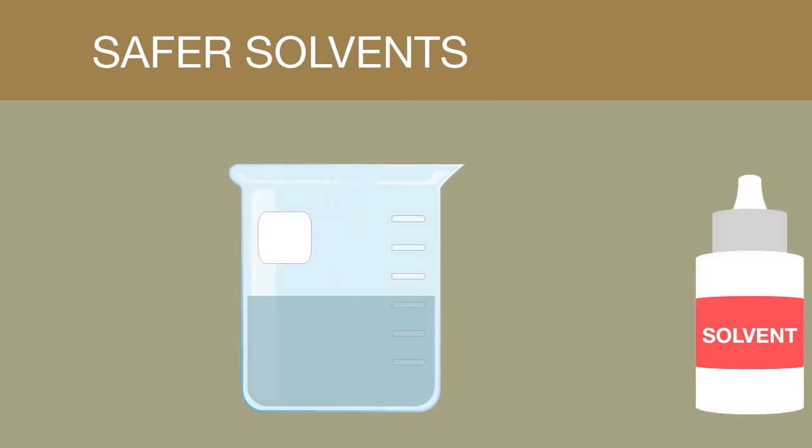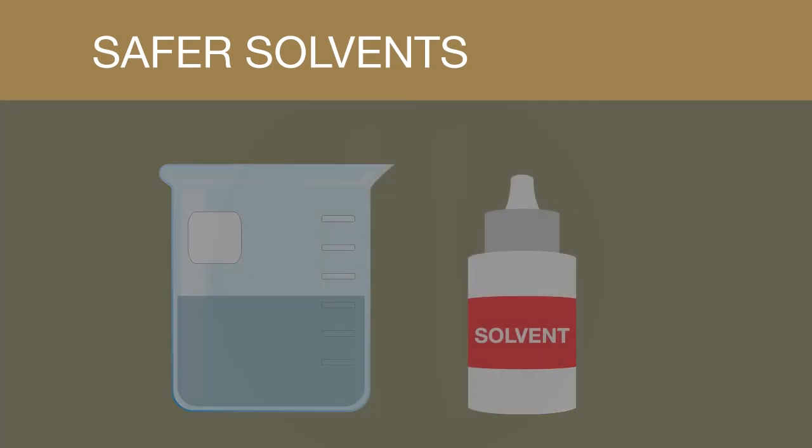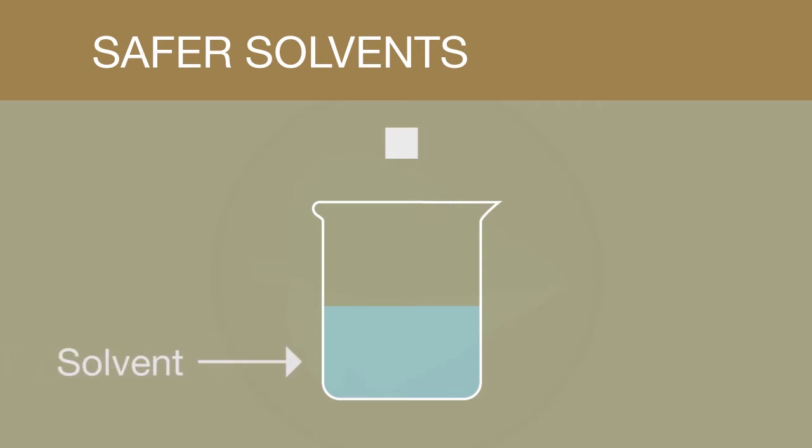Chemical reactions often need a solvent in order for them to take place. Can you remember what a solvent does? The answer is that a solvent will dissolve a solute. This means that two or more soluble compounds may then react with one another to form a new product.